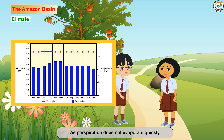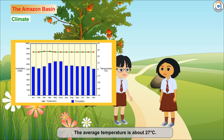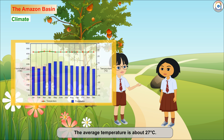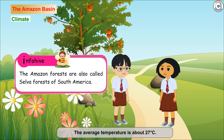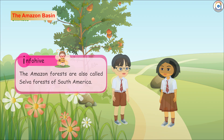There is no marked distinction between summer and winter seasons due to even rainfall and high temperatures throughout the year. As perspiration does not evaporate quickly, the skin feels sticky. The average temperature is about 27 degrees Celsius. The Amazon forests are also called Selva forests of South America.